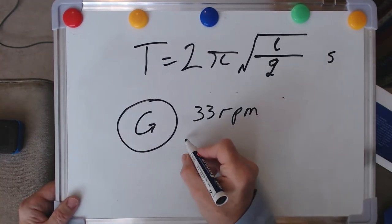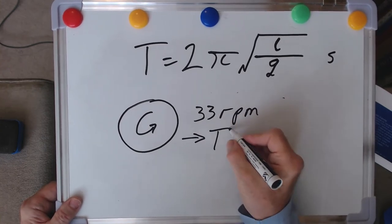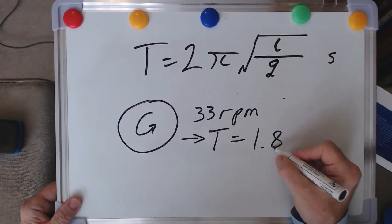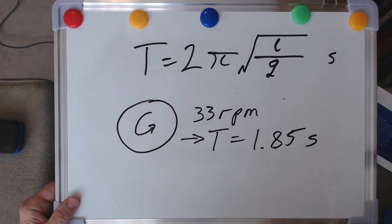And if you do the maths, you'll find that that corresponds to one period, one cycle, being just under 2 seconds, 1.85 seconds.